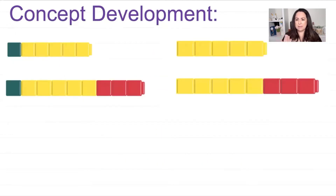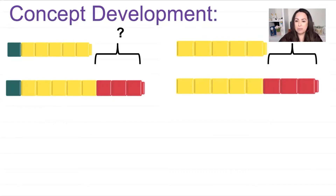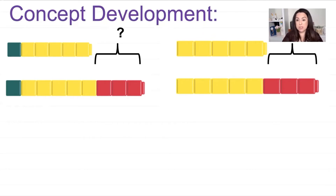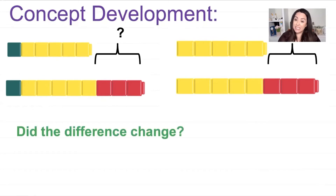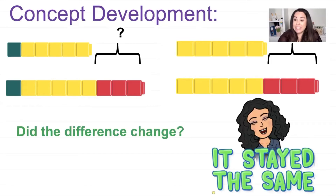Let's compare those side by side. When we compare our cubes together, they look almost the same. I have three on that side and three on the other side. The cubes are almost the same, except on this side I added one more. Did the difference change? No, it didn't change at all — it stayed the same.